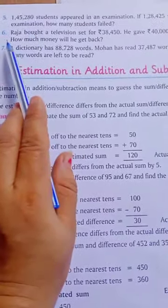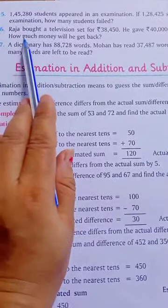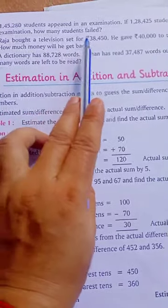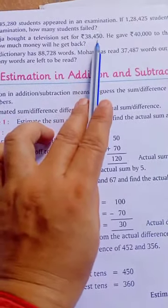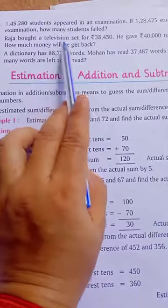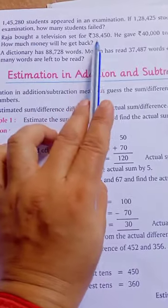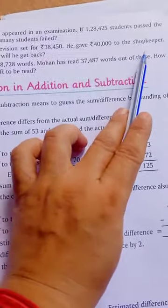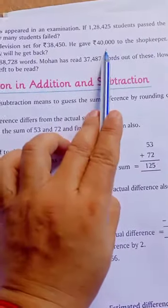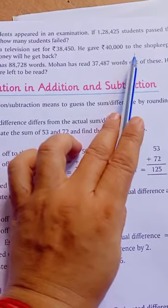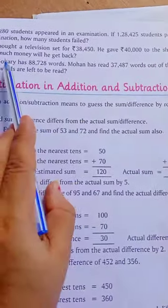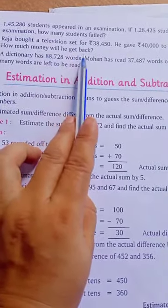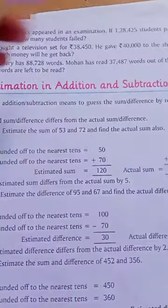Now you solve yourself. Question number 6: Raja bought a television set for rupees 38,450. He gave 40,000 to the shopkeeper. How much money will he get back — तो उसको कितना पैसा वापस मिलता है ये बताना है.